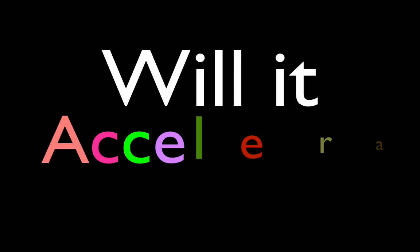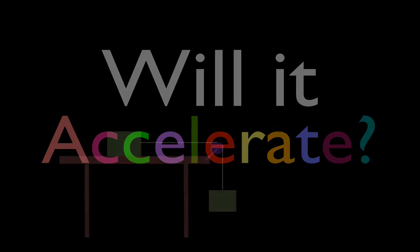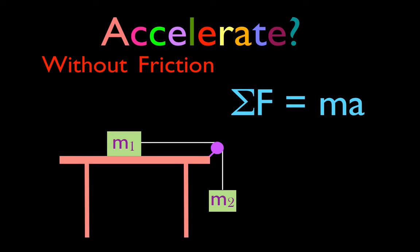In today's video we're going to play one of my favorite physics games: will it accelerate? Here's today's situation. We have object M1 sitting on the table with no friction between M1 and the table. M1 is attached to a string that goes over a pulley, and at the other end of the string we have object M2. We would like to know: are these two objects going to accelerate?